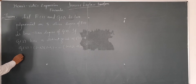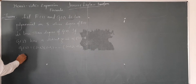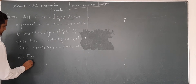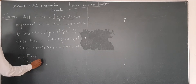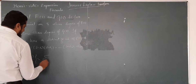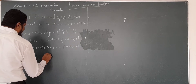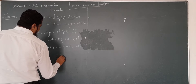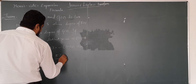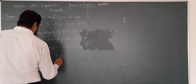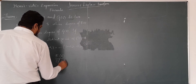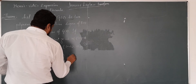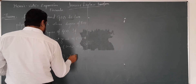Then the inverse Laplace transform of f(s)/g(s) is equal to the summation from i equals 1 to n of f(alpha_i) divided by g'(alpha_i), multiplied by e raised to alpha_i times t.